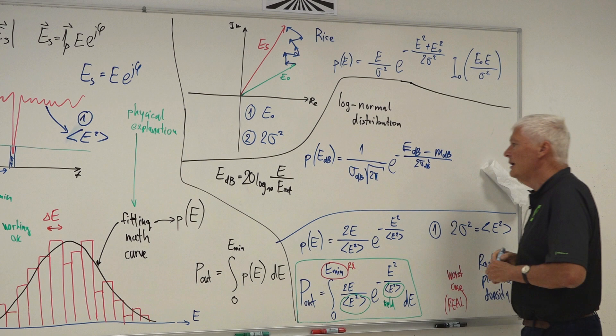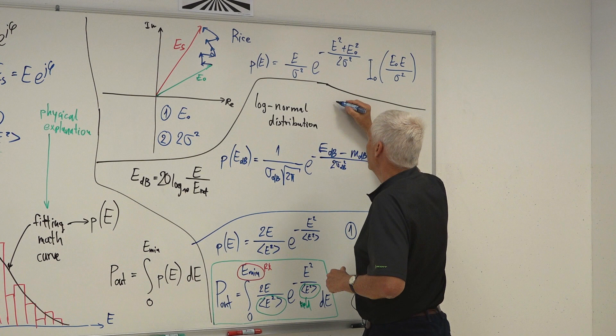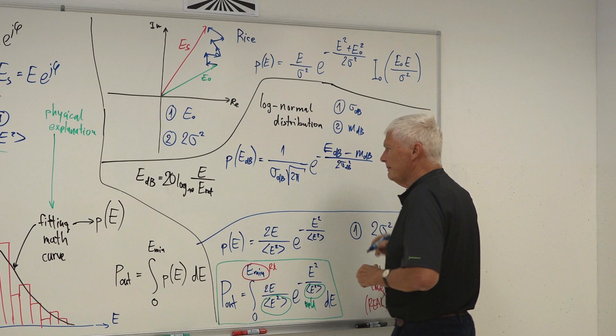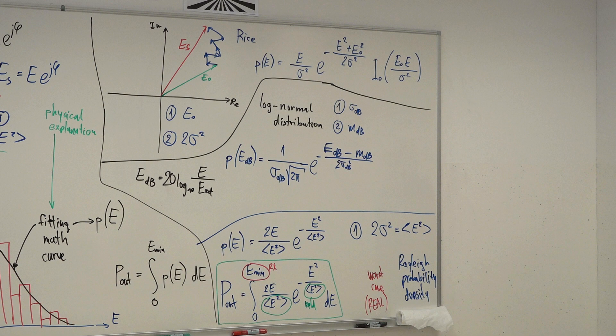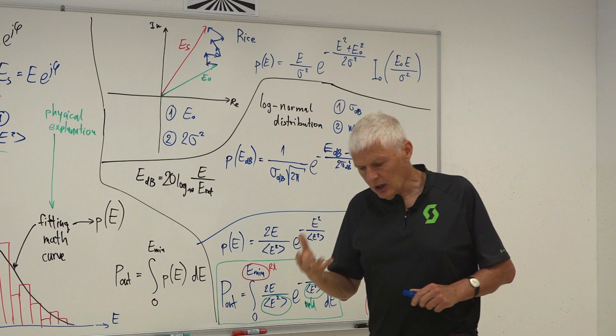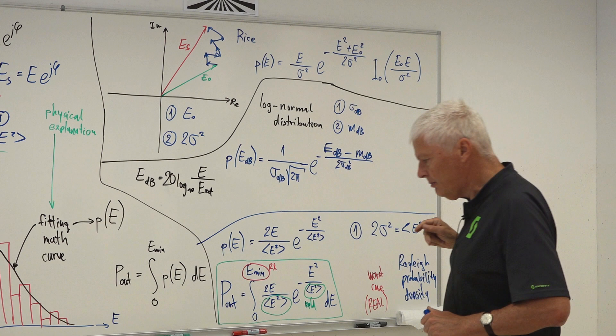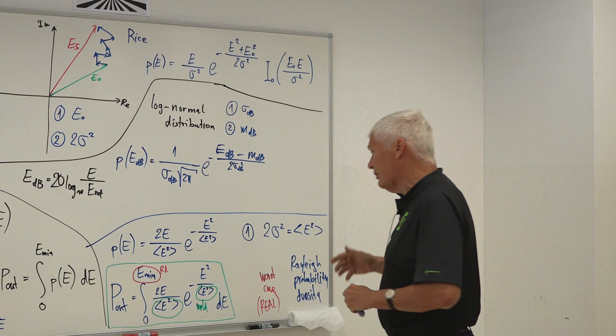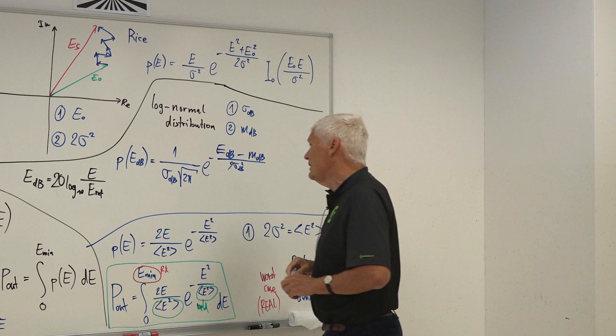For a log-normal distribution I need two data: the standard deviation in dB, and the mean value of the field in dB. This is a good distribution if the total effect is a product of many minor effects — like along the path of radio waves, where some clouds may be raining, others snowing, some doing nothing. The total effect is the product of the individual ones, which is why it makes sense to use logarithmic units and fit a log-normal distribution.